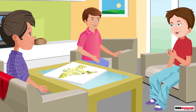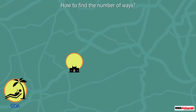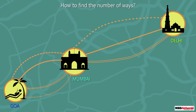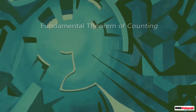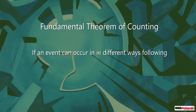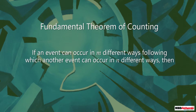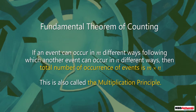Now Sid says he can find the total number of ways by simply applying the fundamental principle of counting. As there are three ways to go to Mumbai from Delhi and four ways to go from Mumbai to Goa, we can simply multiply the numbers of both ways to get the total. This introduces the fundamental theorem of counting, which states that if an event can occur in m different ways, following which another event can occur in n different ways, then the total number of occurrences is m multiplied by n. This is also called the multiplication principle.